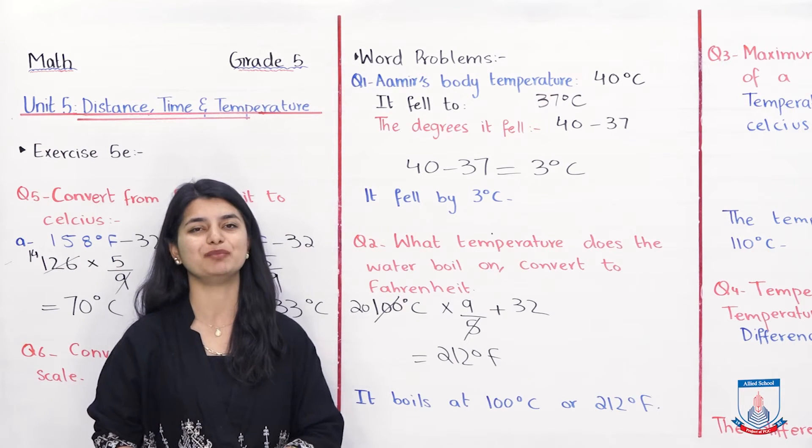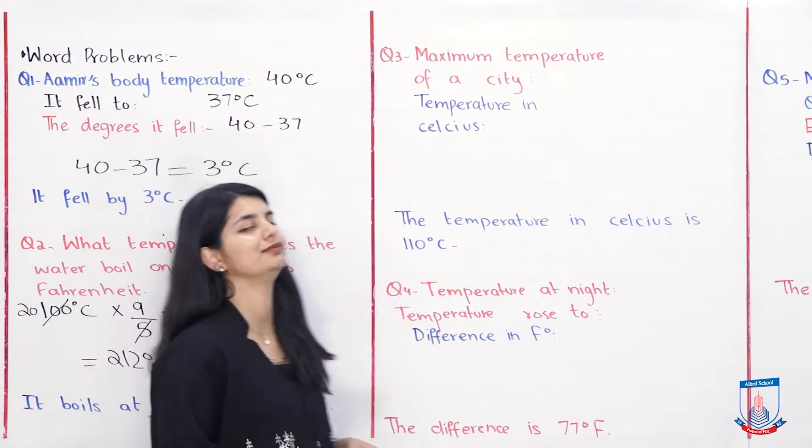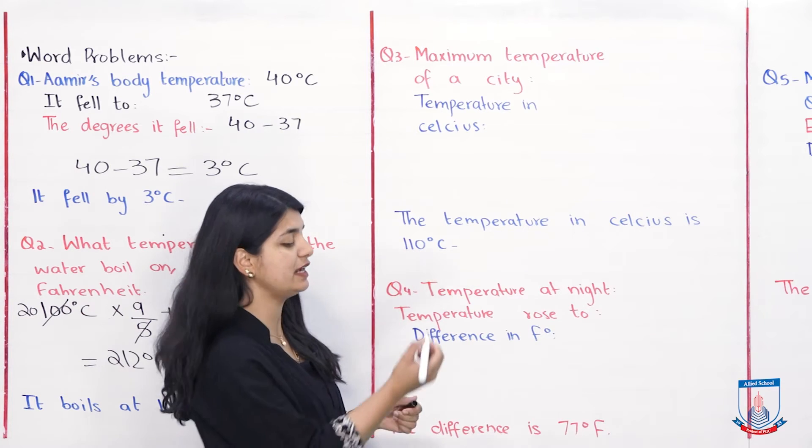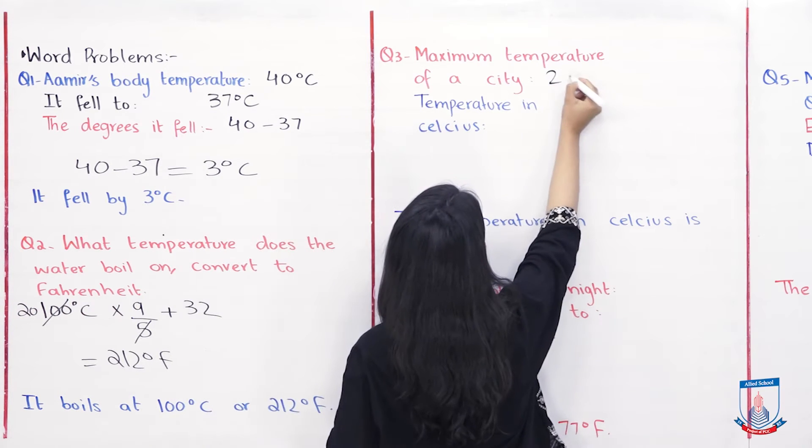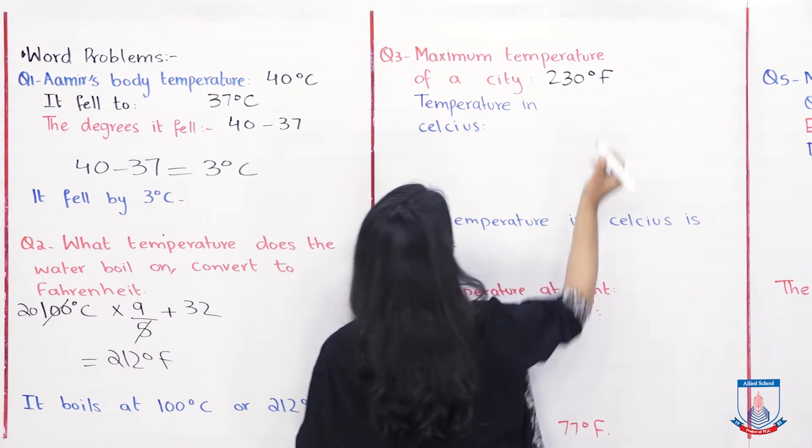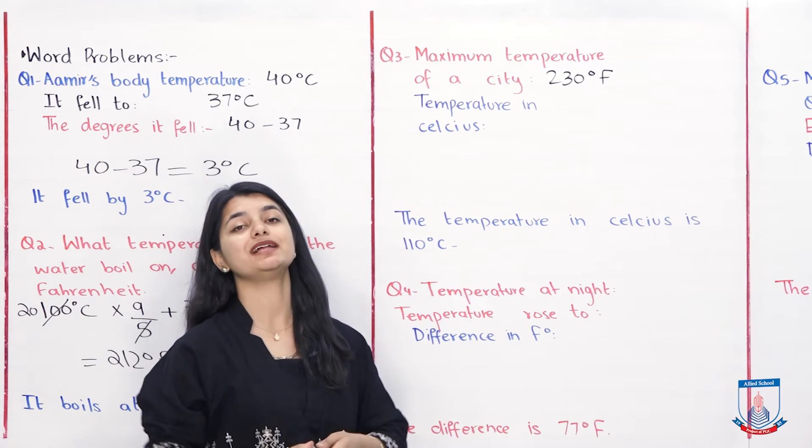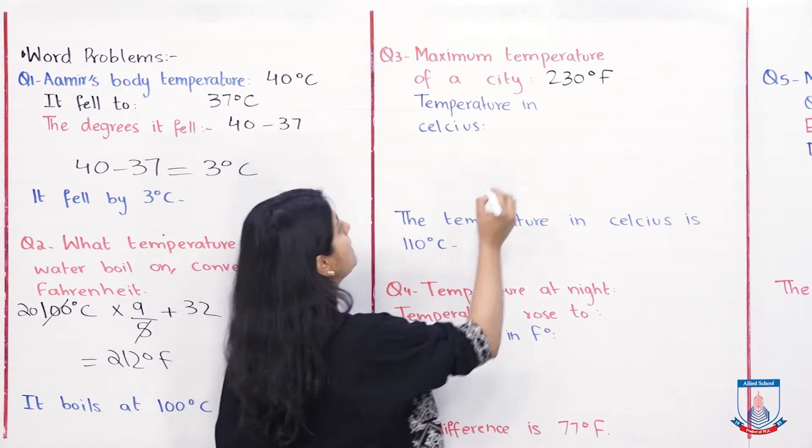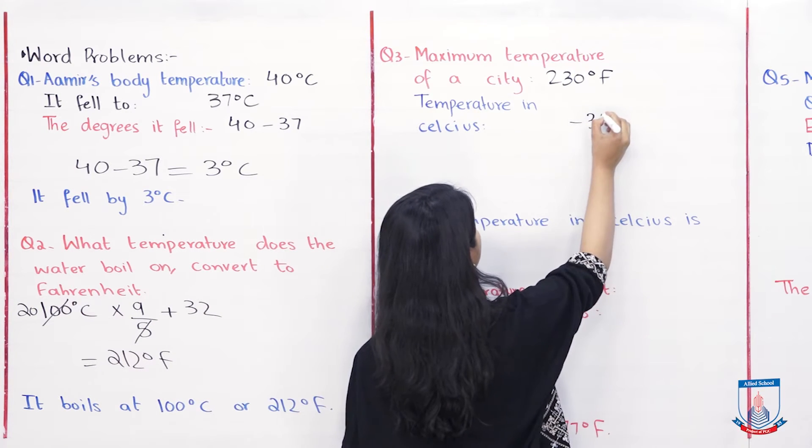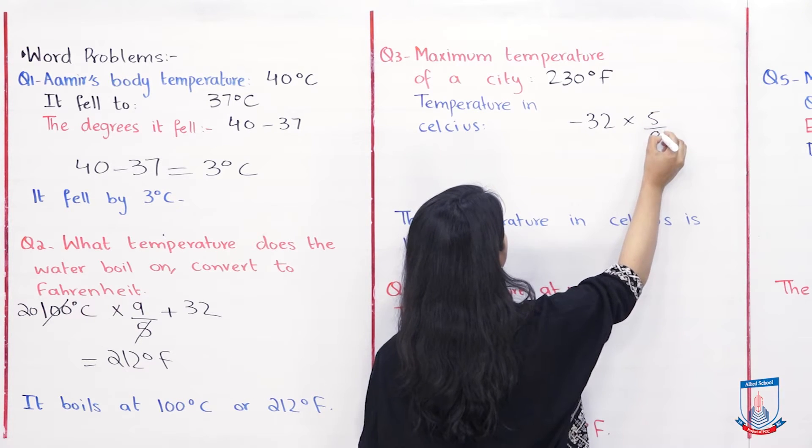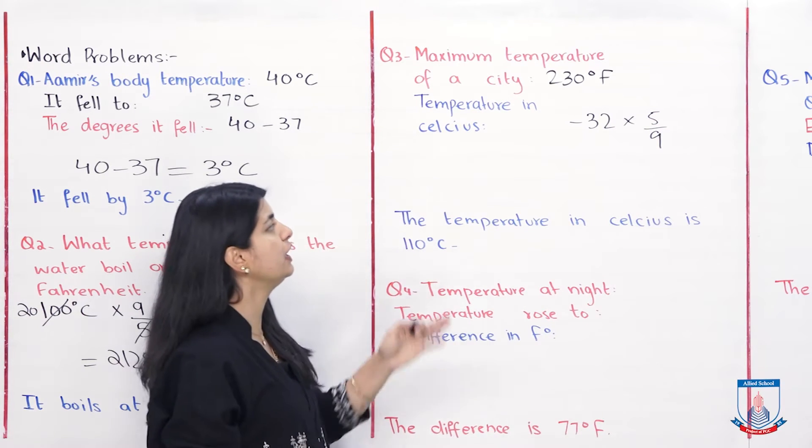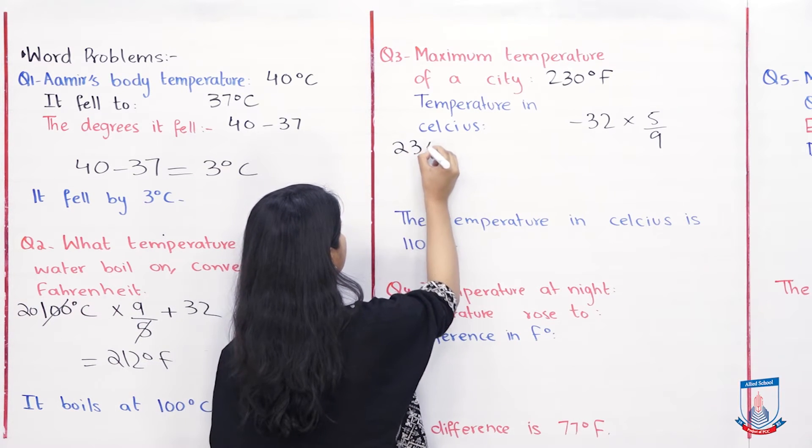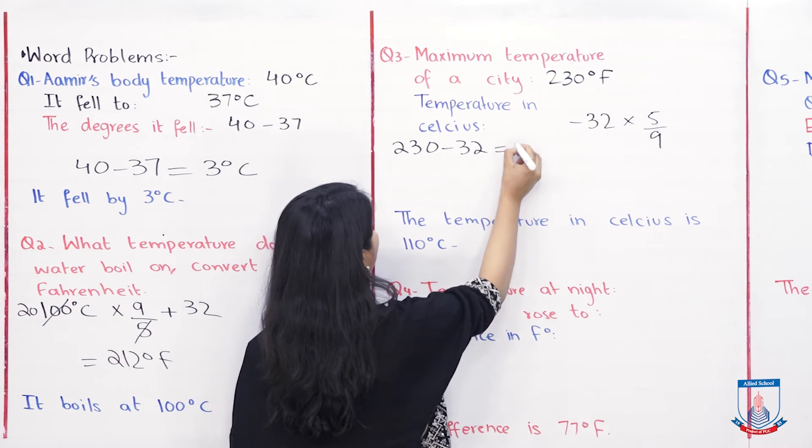Question number three. Maximum temperature of a city is 230 degree Fahrenheit. They are saying that you express it in Celsius. When you go from Fahrenheit to Celsius, which way you go? You minus 32 and you multiply by 5 over 9. So if we do 32 minus, 230 minus 32 is 198.